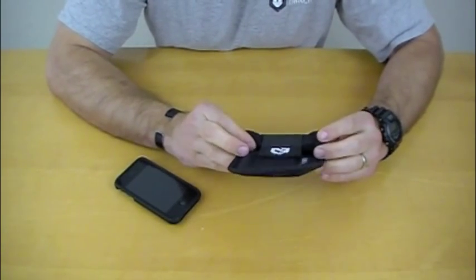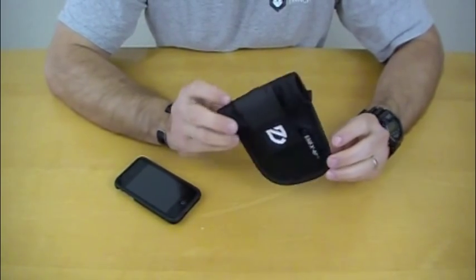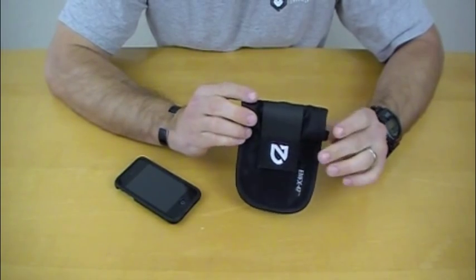And what the EMFX-47 is, is a device which blocks EMF signals and essentially acts as a cloaking device for your cell phone.